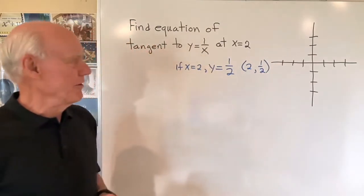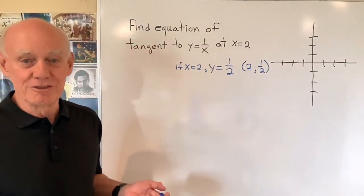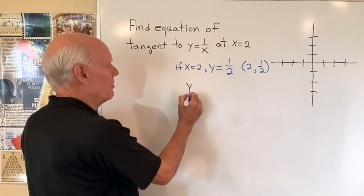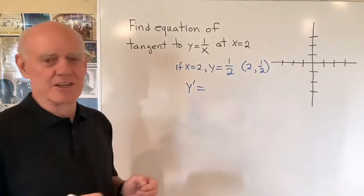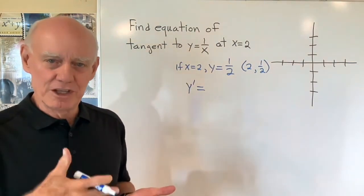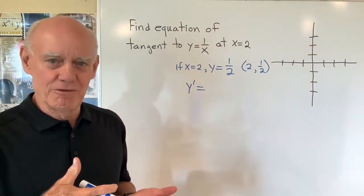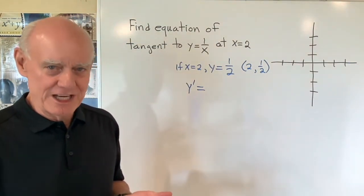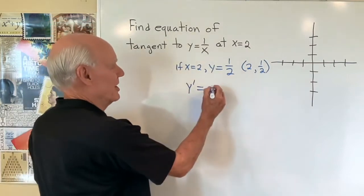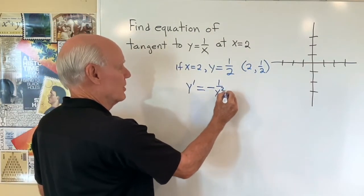And then I want to find the slope of the line, so I need the derivative. So y prime is equal to—I can think of this as x to the negative one, bring the exponent out in front, negative one, to a power one less, negative two. So that will end up to be negative one over x squared.